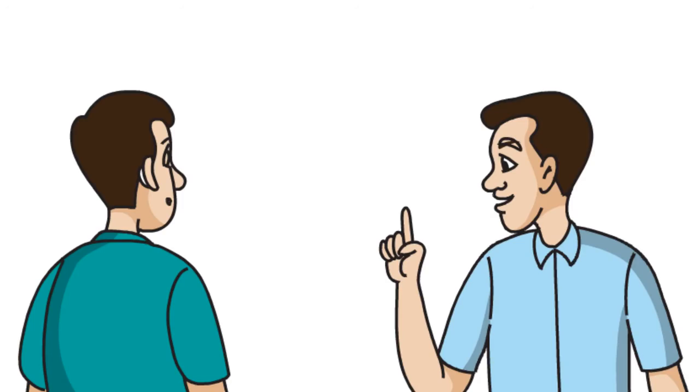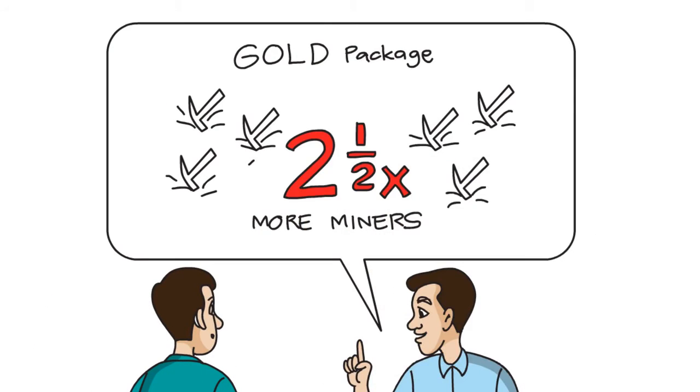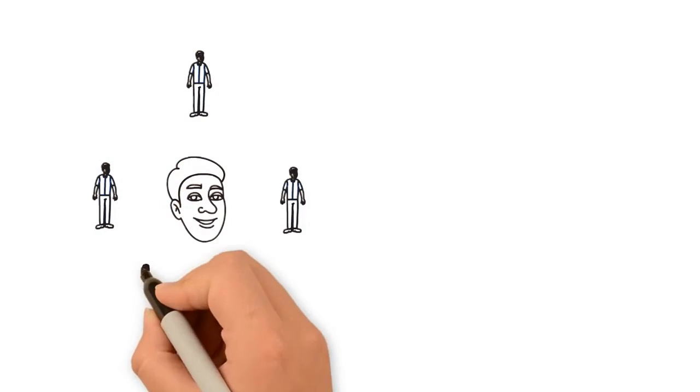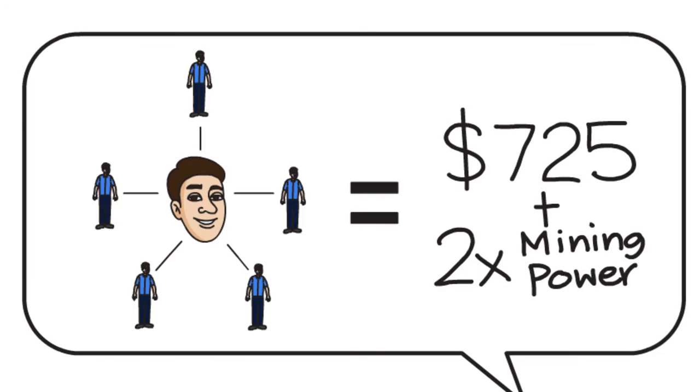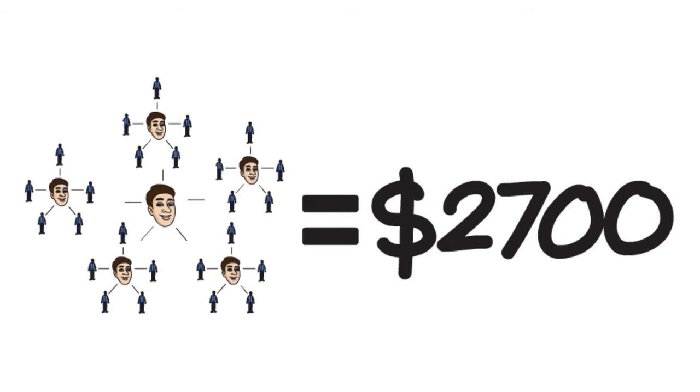He then went on to explain, if you upgrade to the gold package, straight away you have two and a half times more people mining the digital currency for you. Oscar explained that if he shared the gold pack with five more people, he would make $725 and double his mining power. This would increase his daily return, and if those five people shared it with a further five people, he would make another $2,700, and so on.